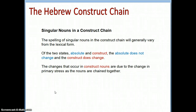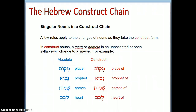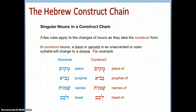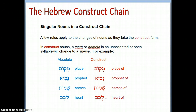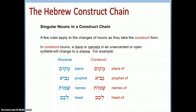Regarding singular nouns in a construct chain — the spelling of singular nouns in a construct chain will generally vary from the lexical form. Of the two states, absolute and construct, the absolute does not change but the construct does. The change occurs due to a shift in primary stress as the nouns are chained together, causing vowel reduction. For example, the mem of 'makom' reduces to a schwa in the construct, and the vowel under the nun also reduces to a schwa.